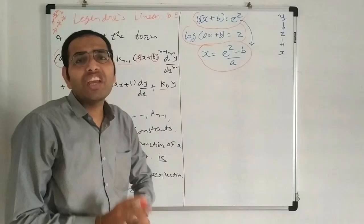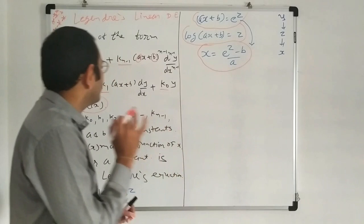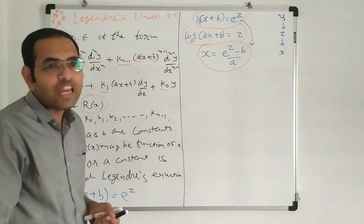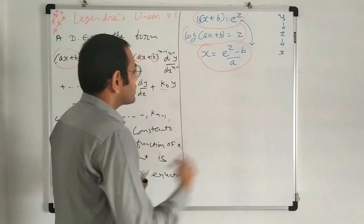Here A and B can have any constant value: 2, 3, 4, 5, minus 3, minus 4, minus 5, etc., whatever the value of A and B. First of all, how do we identify whether a given differential equation is Legendré or not?